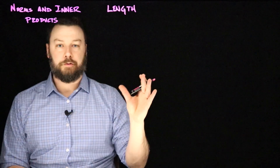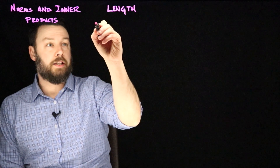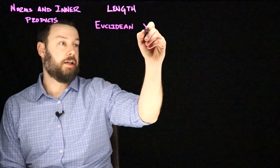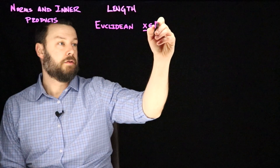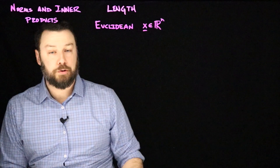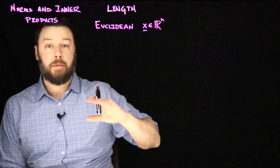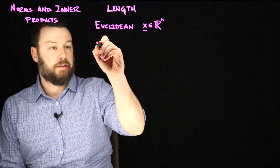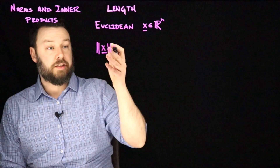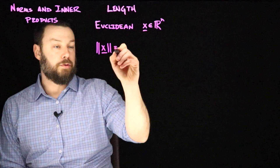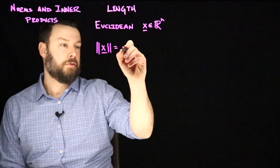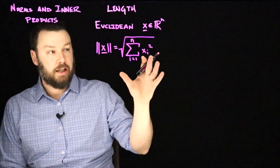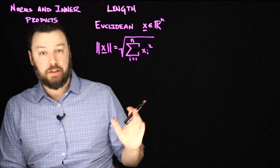Let's start by talking about the length of a vector. You've probably thought about the length of vectors for a long time in Euclidean spaces. If we have a vector x in some n-dimensional space, our notion of Euclidean length maps very well onto things we've discussed since grade school — the Pythagorean theorem. If we write that length with two vertical bars on each side, it equals the square root of the sum of squares of each component.